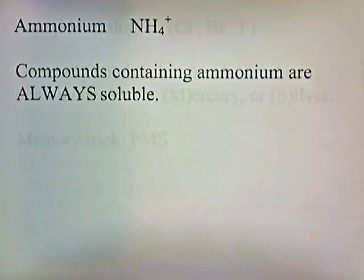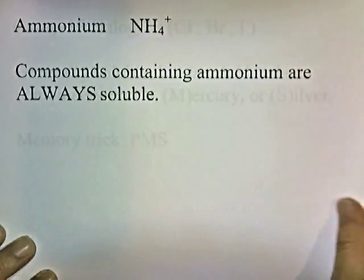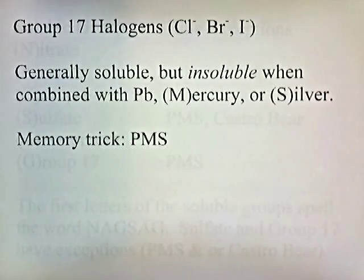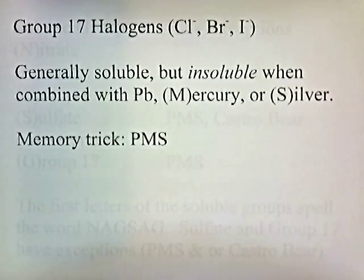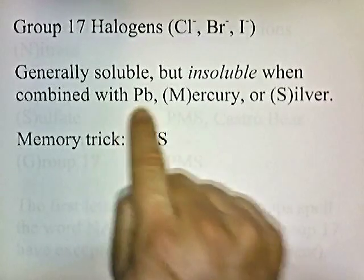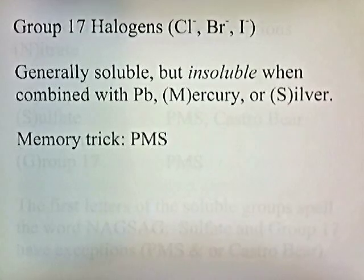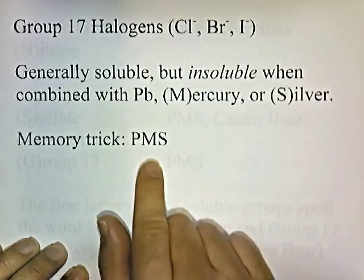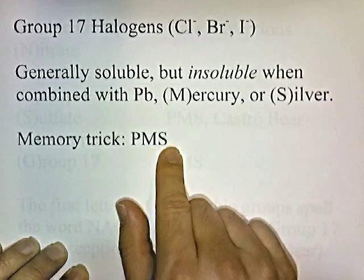Ammonium — compounds containing ammonium are always going to be soluble. Group 17 halogens — chloride, bromide, and iodide — are generally soluble, but insoluble when combined with lead, mercury, or silver. Once again, we use the memory trick of PMS: Pb for lead, M for mercury, and S for silver.